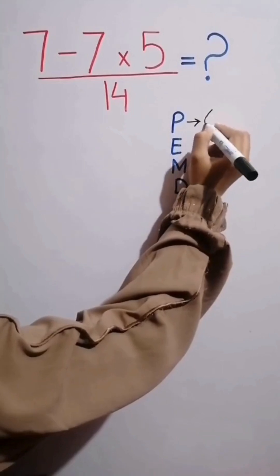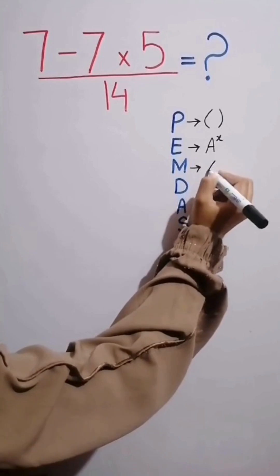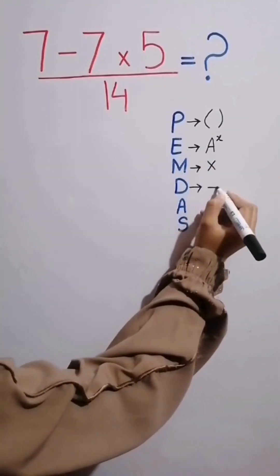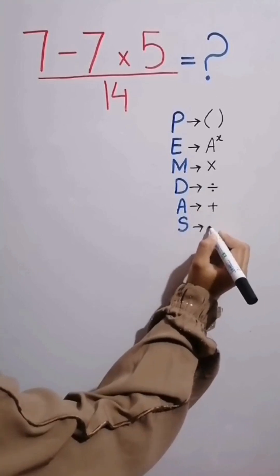P stands for parentheses, E stands for exponent, M stands for multiplication, D stands for division, A stands for addition, and S stands for subtraction.